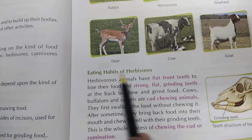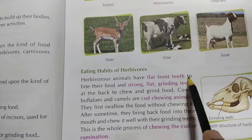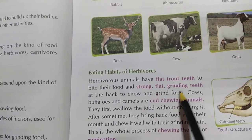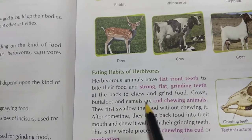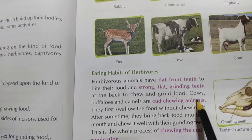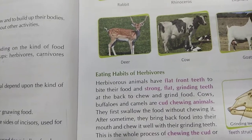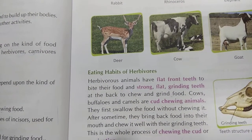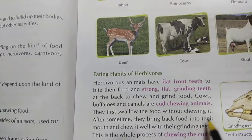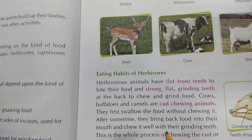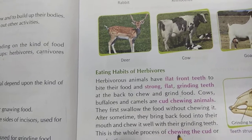Now we see how they eat — eating habits of herbivores. Herbivores animals have flat front teeth to bite their food, and strong flat grinding teeth at the back to chew and grind food. Cows, buffaloes and camels are cud-chewing animals. They first swallow the food without chewing it, then later bring it back into their mouth and chew it well with their grinding teeth.